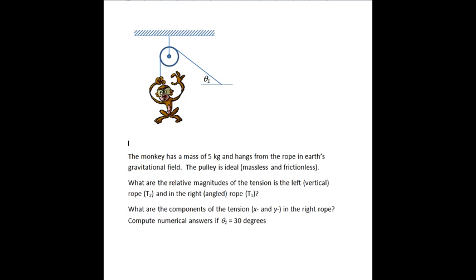So there are a couple of questions here. First is what are the relative magnitudes of the tension in the left rope, that is where the monkey is holding, and in the right rope, the one that's tied to the ground. So if this is T2 on the left and this is T1 on the right, what relation is there between those tensions? And then the second question is if the monkey is hanging there, what are the components of the X and Y forces in the rope? So the components of T1.